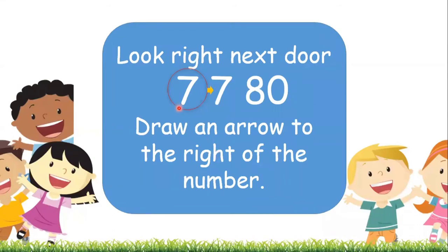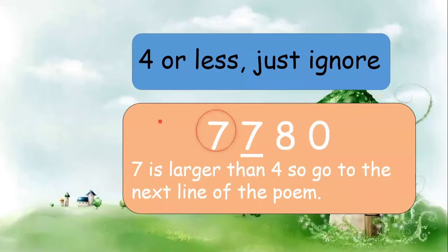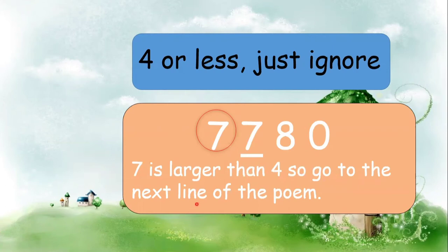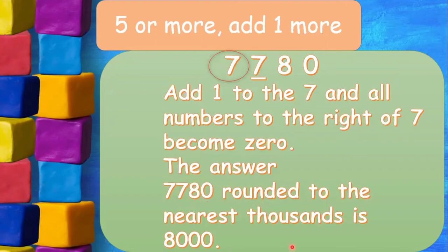Look right next door — draw an arrow to the right of the number. To the right of the number is number seven. Since seven is larger than four, we go to the next line of the poem: five or more, add one more. So we will add one to the seven in the circle, and all numbers to the right become zero. The answer of 7,780 rounded to the nearest thousand is 8,000.